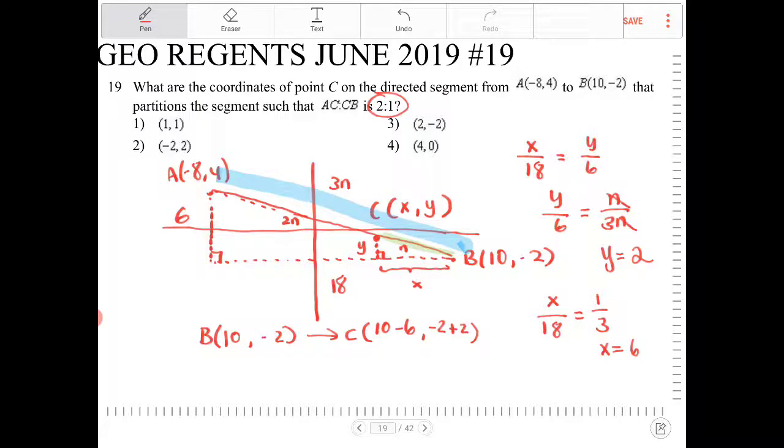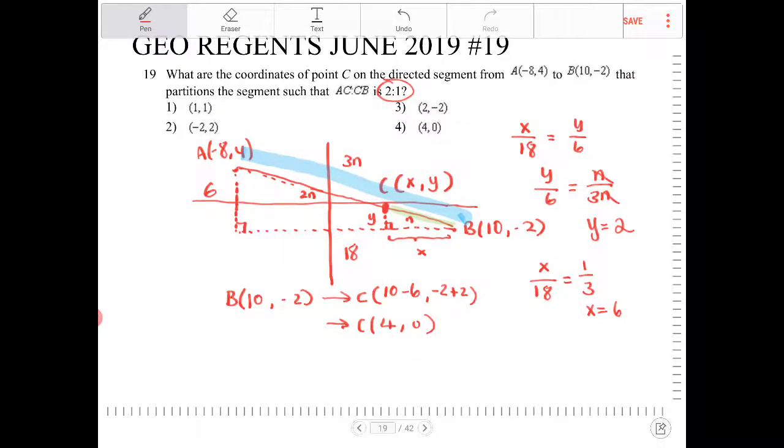So this is going to be (4, 0), so that is going to be roughly the location of x, y, it's going to be (4, 0). So which option is that going to be? That's going to be option 4.